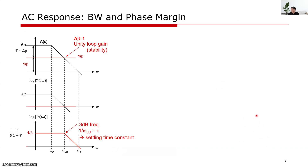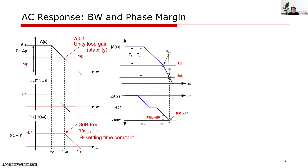Understanding AC response is very important. What we care about is the unity loop gain frequency. At the unity loop gain frequency, by checking the phase margin, we can tell how stable the loop is. If we look at the closed-loop response, it follows one over beta. After the unity loop gain frequency, the closed-loop gain follows the amplifier open-loop characteristic. This gives us the minus-3 dB frequency for the closed-loop amplifier, which determines the settling time constant. As we push this unity loop gain frequency higher, we get a lower tau, meaning a faster settling amplifier.